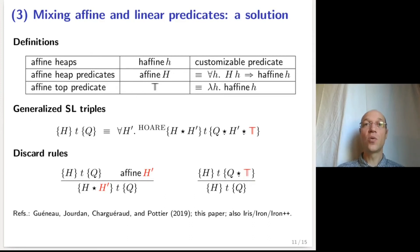Doing so, preserve the validity of all the prior rules of separation logic, and adds two additional rules. The first one asserts that any piece of precondition H-prime may be discarded from the precondition, provided that it is affine. The second rule allows to extend the postcondition with an affine top predicate, reflecting on the fact that it is fine to produce a postcondition that is bigger than the desired one.